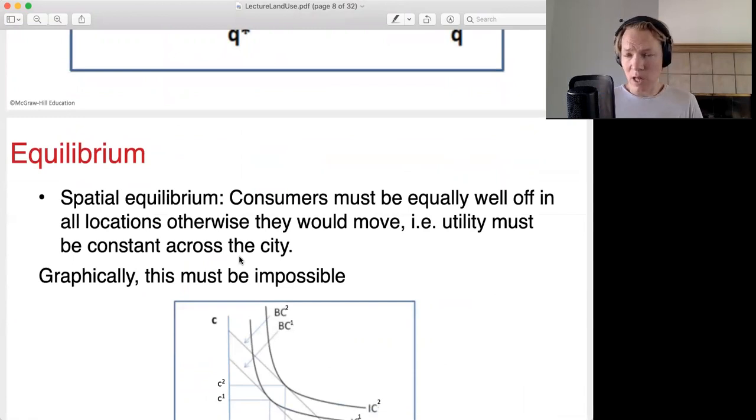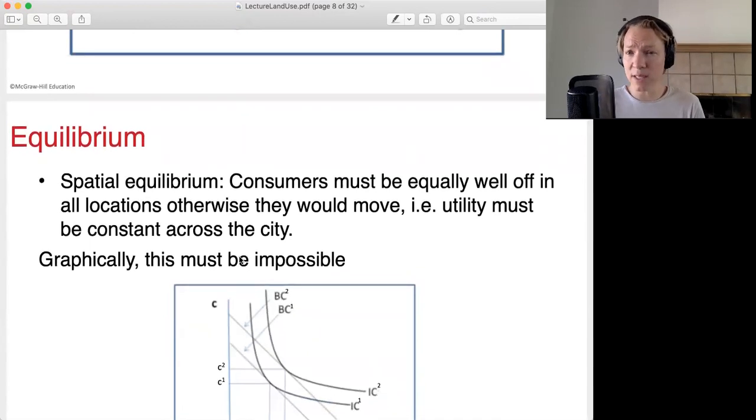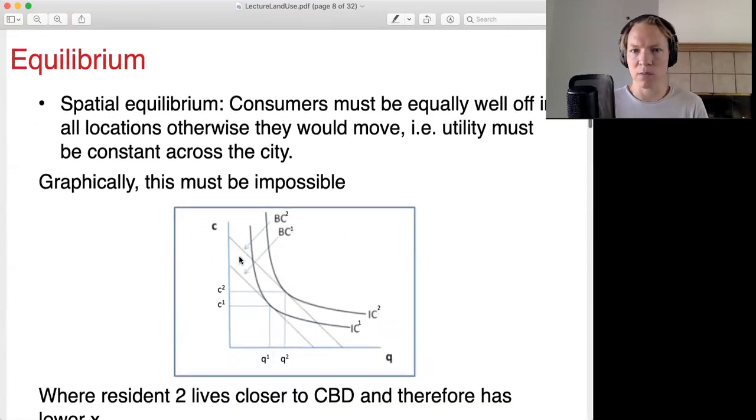Now we have assumed identical households with identical income. Therefore, what that means is people living in the city center have to be equally happy to those that are in the suburbs. Otherwise there will be movement. So in order for the spatial equilibrium to work and that nobody wants to move, everybody has to be equally happy, either in the city center or elsewhere. Otherwise people will be moving back and forth. For the spatial equilibrium to work, people have to be equally happy. Now, if prices were the same, if it cost the same amount to live in the city center versus the suburbs, this would not be possible.